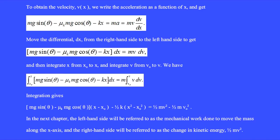To obtain the velocity v of x, we write the acceleration as a function of x and get mg sine theta minus mu k mg cosine theta minus kx equals ma, but we write the acceleration as v dv dx. Move the differential dx from the right side to the left side to get this equation.